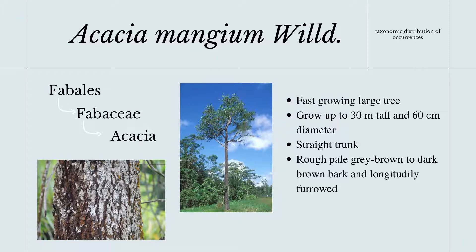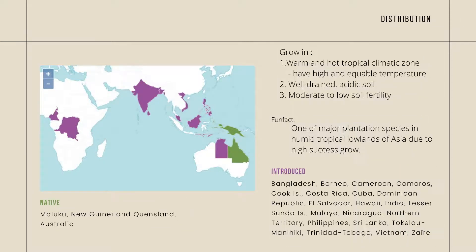This species is known as the brown salwood tree. It is a fast-growing, large tree that can grow up to 30 meters tall with a 60 centimeter diameter. It has three trunks that can occupy over half of the total tree height. The bark is rough, pale grey-brown to dark brown with a longitudinal furrowed pattern. Acacia mangium grows in hot and warm climatic zones with high and equable temperature, and in well-drained acidic soil of moderate to low fertility.